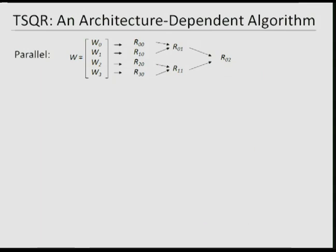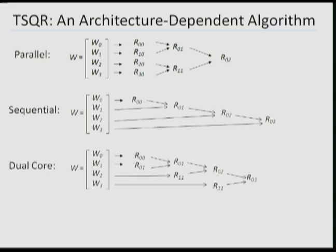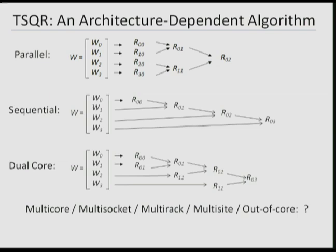In the parallel case this is basically a tree reduction where the reduction operation is this little QR algorithm, and out pops R at the end — and it minimizes communication. For a sequential machine I use a different tree: if only a quarter of the matrix fits in cache at a time, I bring in each quarter, do QR, stack them, and can do the whole operation reading the matrix from memory just once. For a dual-core machine I might use a different tree, and for a real computer — multi-core, multi-socket, multi-rack — I pick a different reduction tree dynamically depending on hardware resources. It will provably minimize communication.